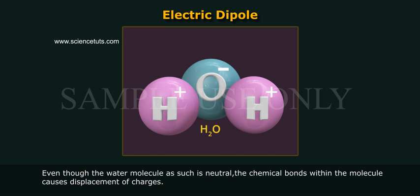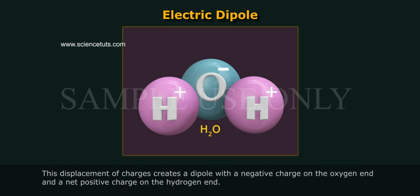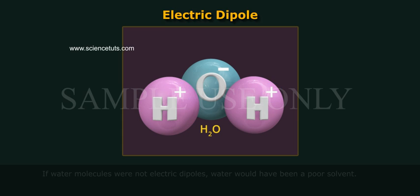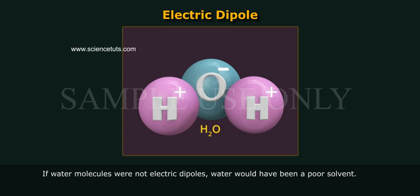Even though the water molecule as such is neutral, the chemical bonds within the molecule cause displacement of charges. This displacement of charges creates a dipole with a negative charge on the oxygen end and a net positive charge on the hydrogen end. If water molecules were not electric dipoles, water would have been a poor solvent.